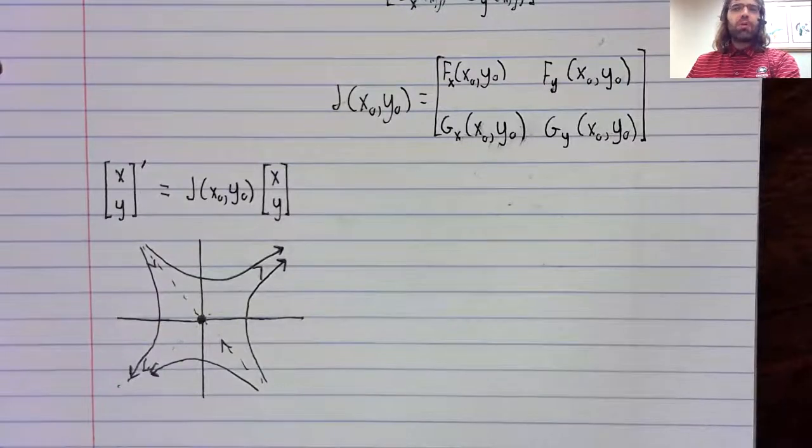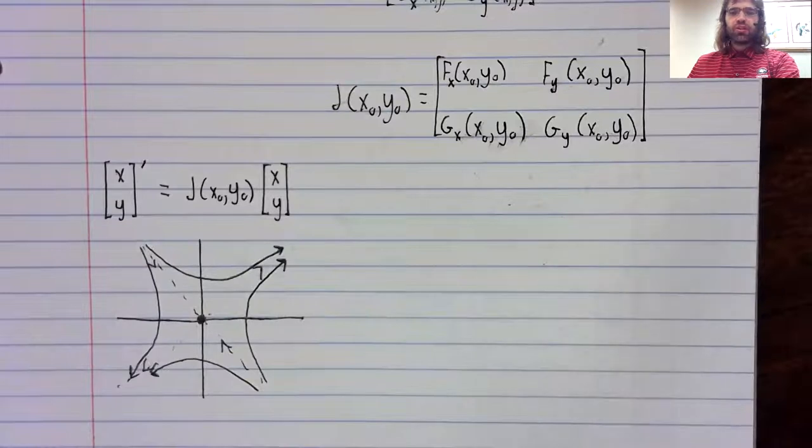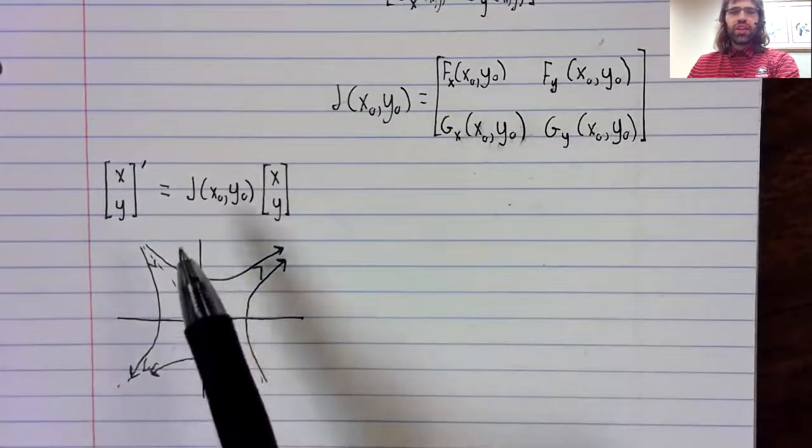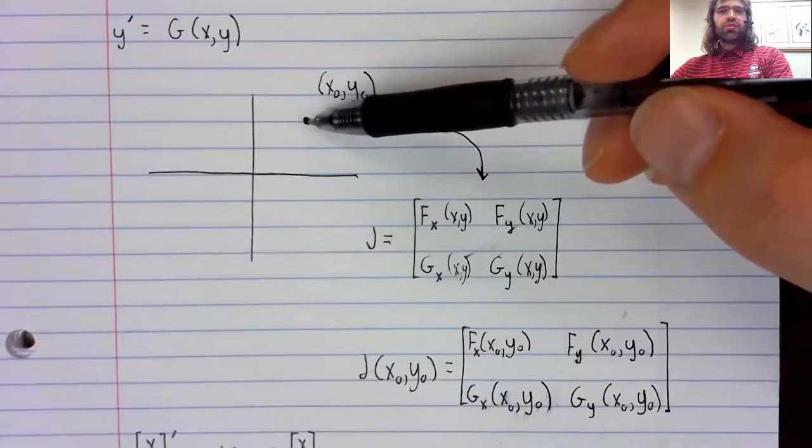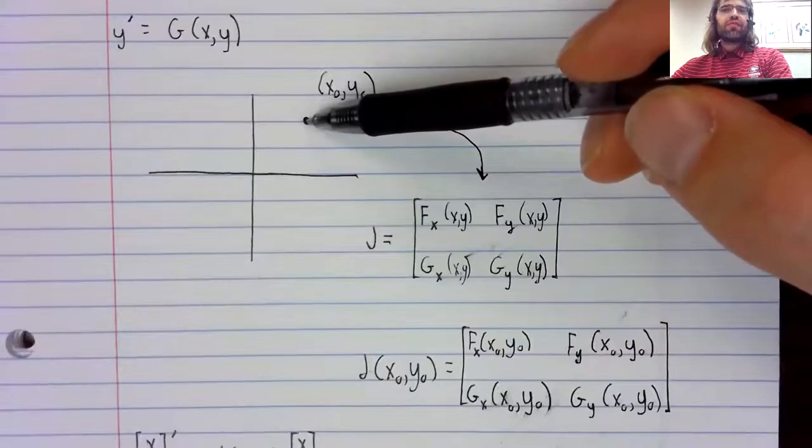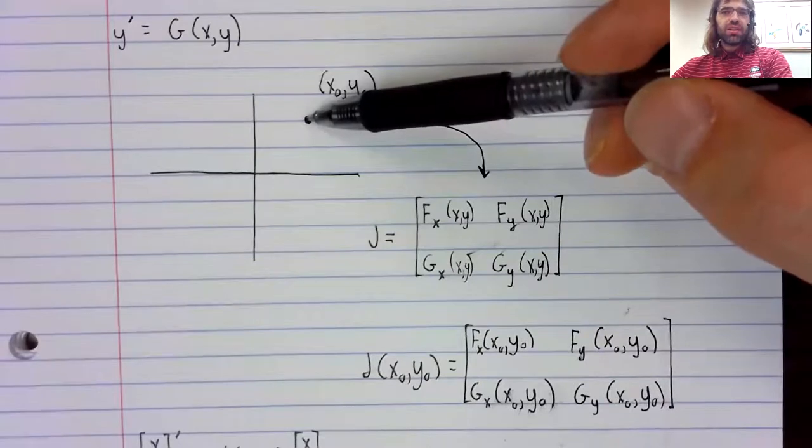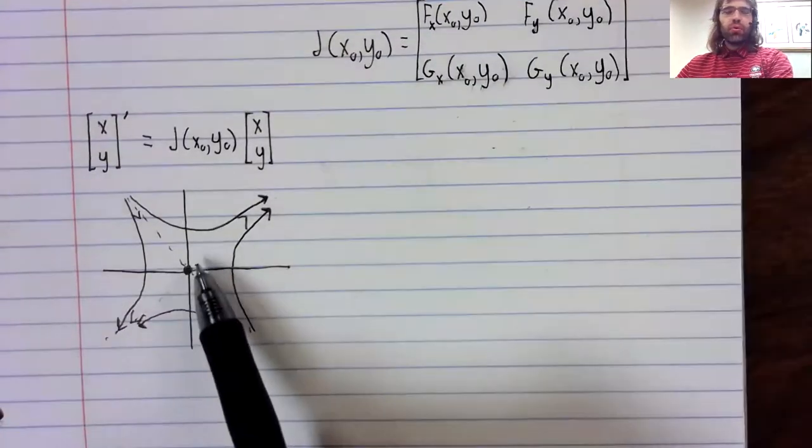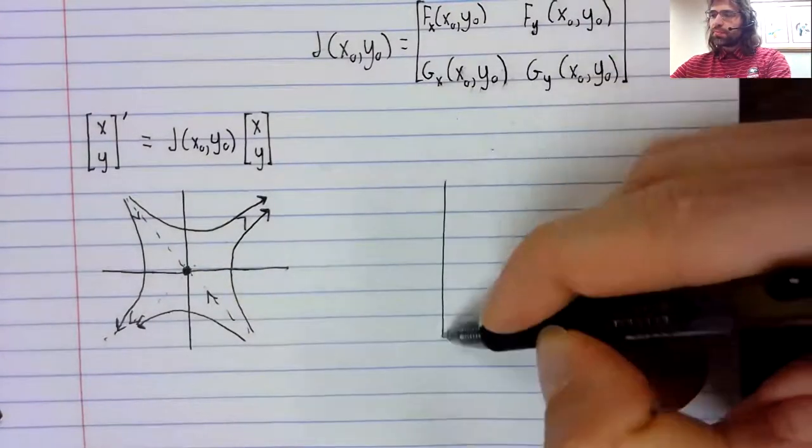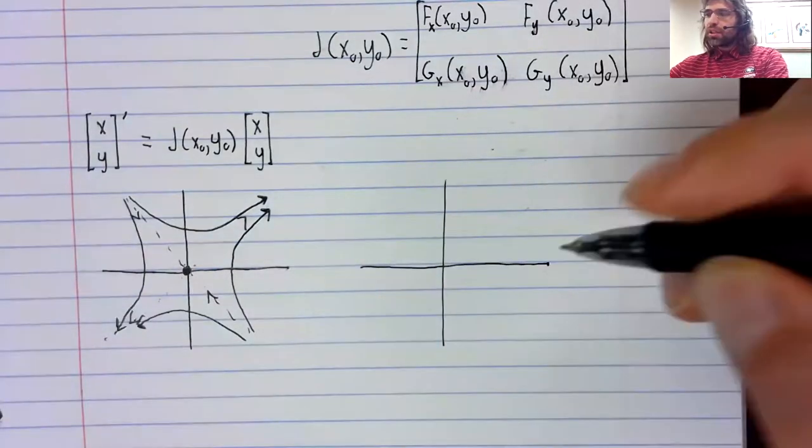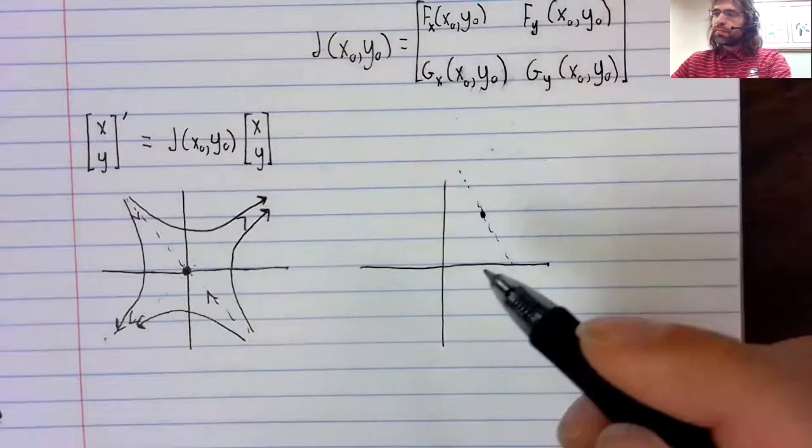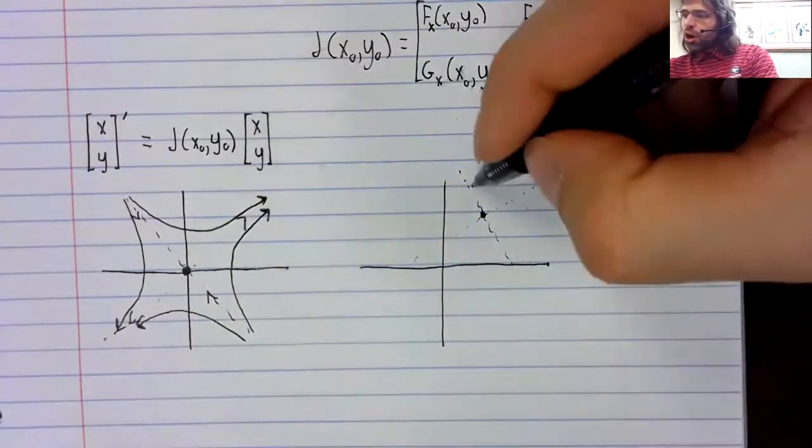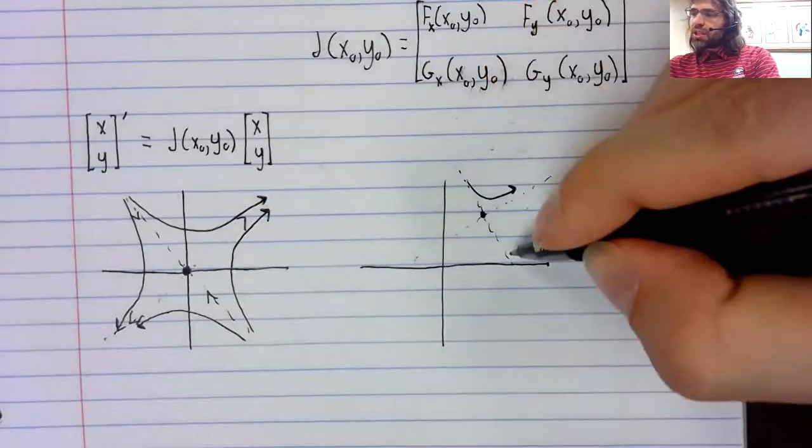The major result of this section is the following. Under some relatively minor conditions, which we will look at in another video and another set of notes, the origin here and this fixed point up here are the same type of fixed point and they have, therefore, the same stability. So if the origin is a saddle, then this fixed point x0, y0 is also going to be a saddle.